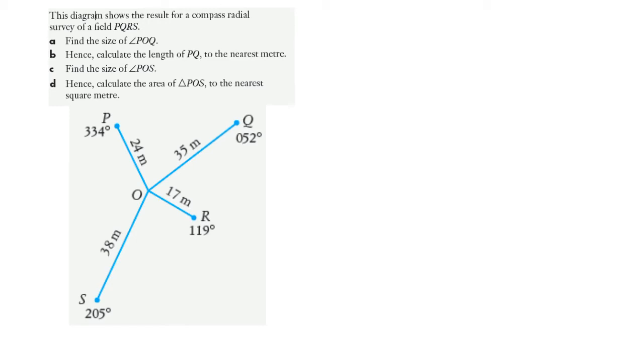Here we've got an example of a radial survey question. Now we've got four points P, Q, R and S with O in the center. So our first thing we're asked to do here is find the size of angle POQ, which is that angle there. I'm going to include north as well only because it's going to be useful for this first part of my question.